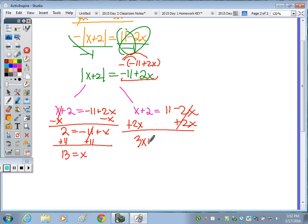So 3x plus 2 equals 11. Subtract the 2, 3x equals 9. Divide by 3, and x equals 3.